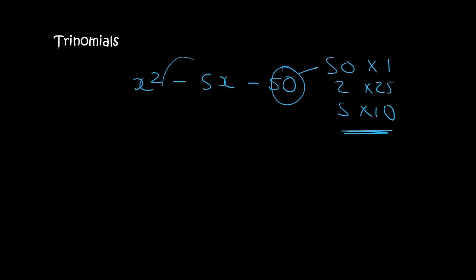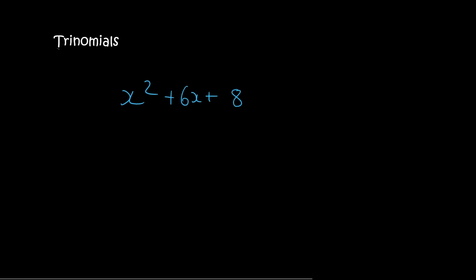Now, 5 and 10 can make minus 5. How? Well, if I say 10 minus 5, that won't work, because that's 5. But, if I say 5 minus 10, that does work, because that's minus 5. So, I open up two brackets, and I get x and x. The 5 is positive, and the 10 is negative. So, there we have it.